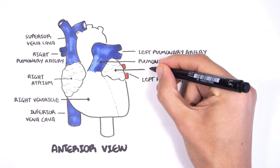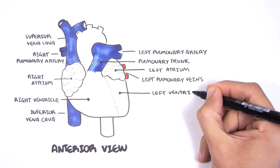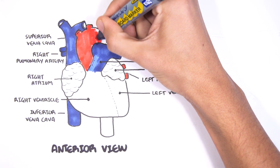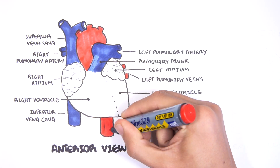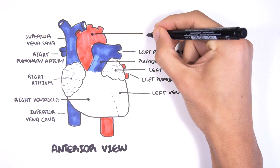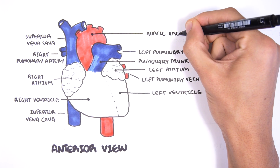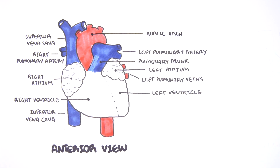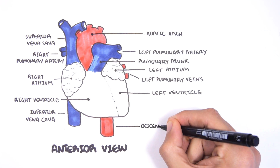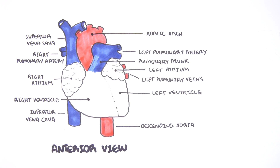Blood will go to the left atrium, and then the left ventricle, and then from the left ventricle up to the aorta. The top part of the aorta is known as your aortic arch. Blood can then go up to the upper body or down to the lower body via the descending aorta from the back.